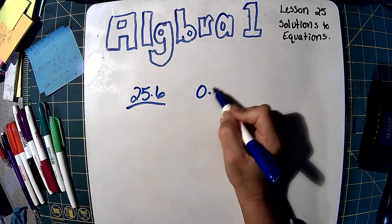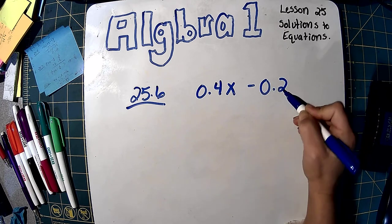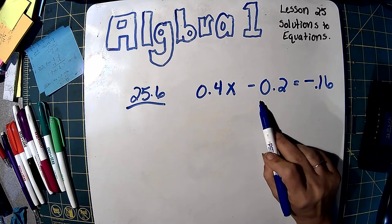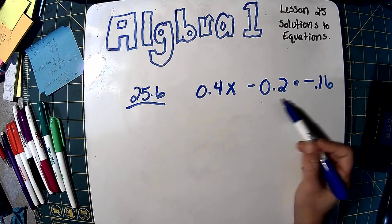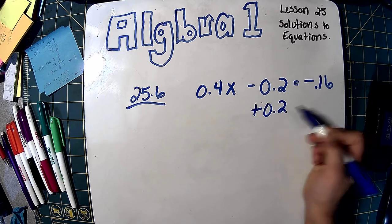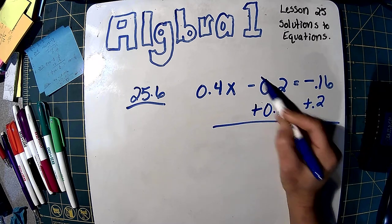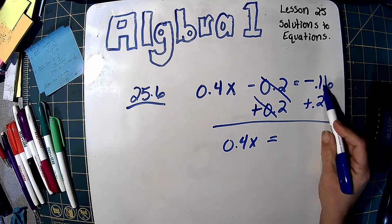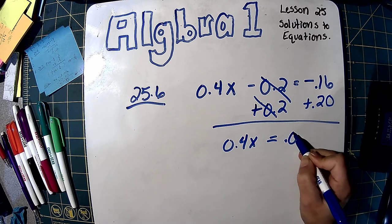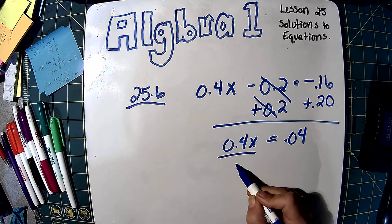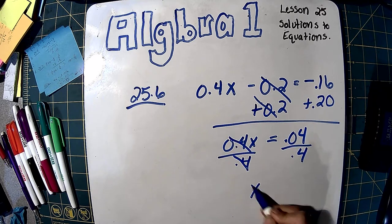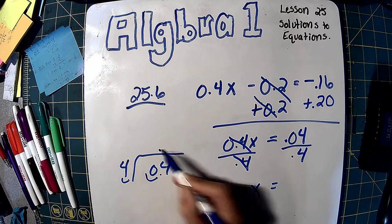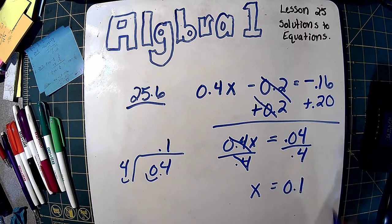25.5: 0.4x minus 0.2 equals negative 0.16. Same thing — it just has decimals. Here is our subtraction, so we're going to do the opposite and add 0.2 to both sides. Those cancel and we get 0.4x equals negative 0.16 plus 0.20, which is 0.04. Now we divide by 0.4 on both sides. If you can't do that in your head, you can say 0.04 divided by 0.4 — move the decimal one place and it goes in one time. So x equals 0.1.